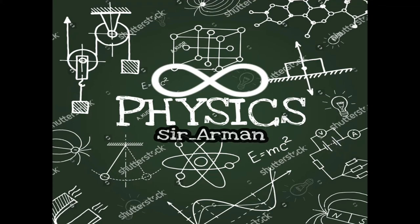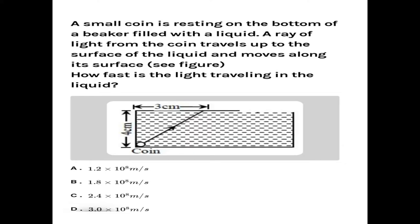Hello everyone, welcome to Infinity Physics. In this lecture we will discuss a question related to ray optics, Class 12. The question: a small coin is resting on the bottom of a beaker filled with a liquid. A ray of light from the coin travels up to the surface of the liquid and moves along its surface. How fast is the light traveling in the liquid?